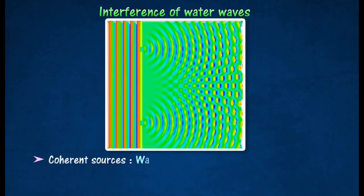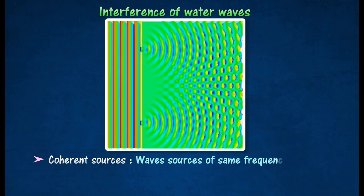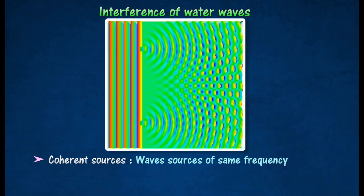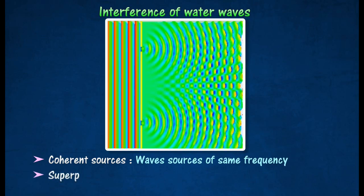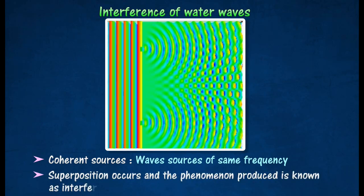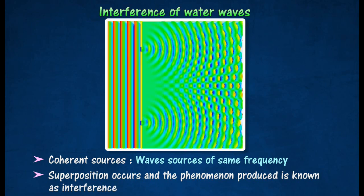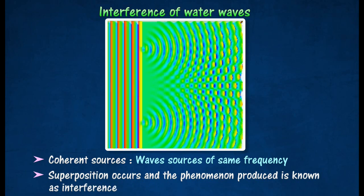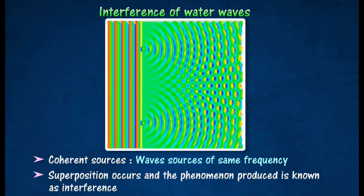The source of waves is coherent, which maintain a constant phase difference and same frequency. Such a pattern of ripples is produced when water waves which are approaching each other meet and overlap. The waves are said to be undergoing superposition, and the phenomenon produced is known as interference.